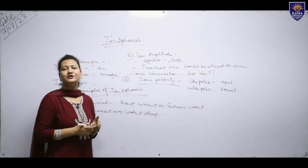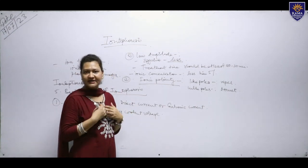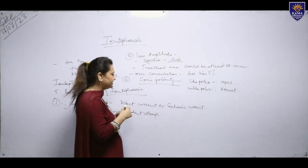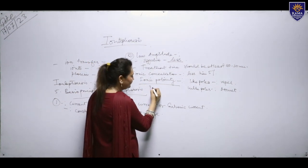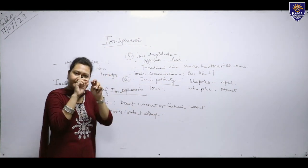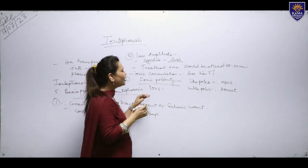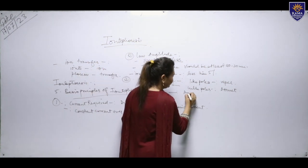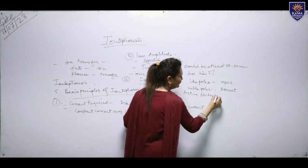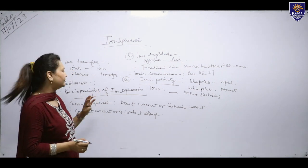Basically, we are introducing ions into the body. The electrode on which we are introducing the ions is always known as the active electrode. This was the third basic principle of iontophoresis.